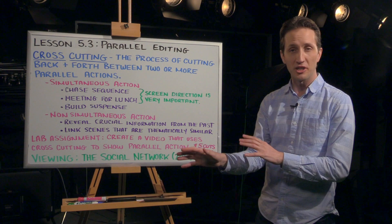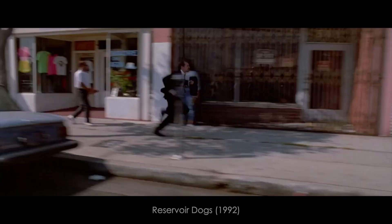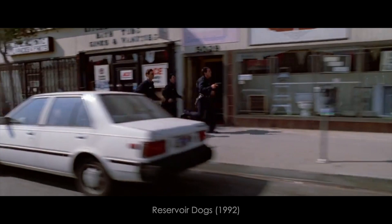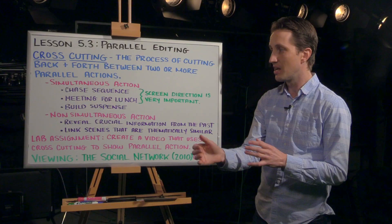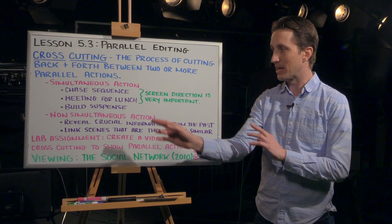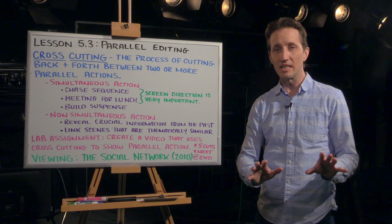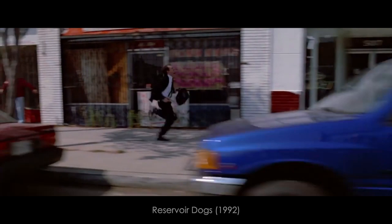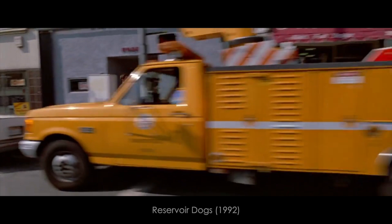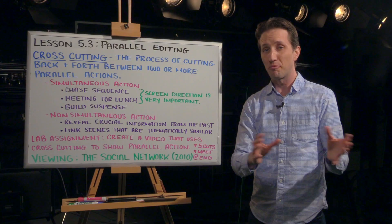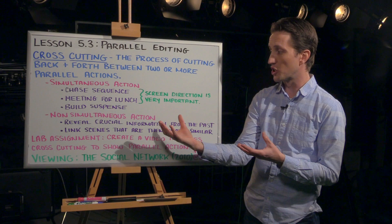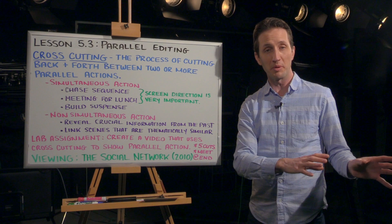These actions can be simultaneous, like in a chase sequence, like we see in this example from Reservoir Dogs — Mr. Pink running down the street carrying a bag of jewels, and the three police officers chasing after him, cutting back and forth between Mr. Pink and the officers. And even though these shots were filmed hours apart, maybe even days apart, the way they're edited together makes it look like they're happening simultaneously. We don't need to see these characters in the same shot to understand that this character is being chased. With a chase scene like this, it's very important that the characters be running in the same direction. Mr. Pink is running from left to right; therefore, the officers chasing him should also be running left to right. If Pink was running left to right but the officers were running right to left, it would look like these characters were running towards one another and not one group chasing another.